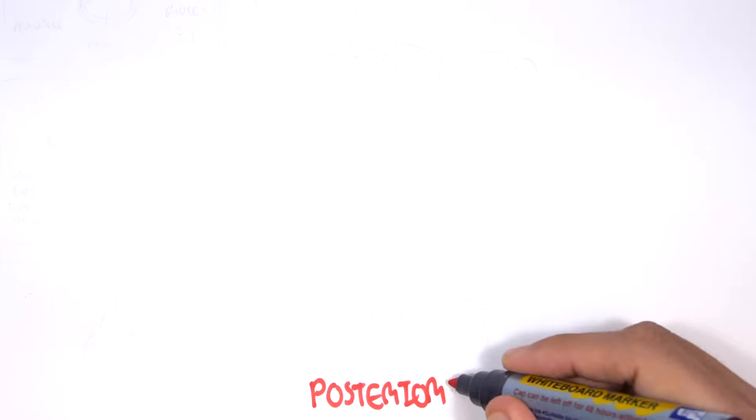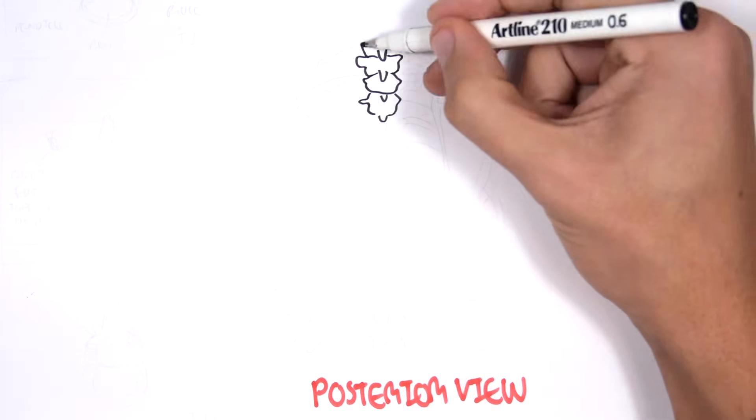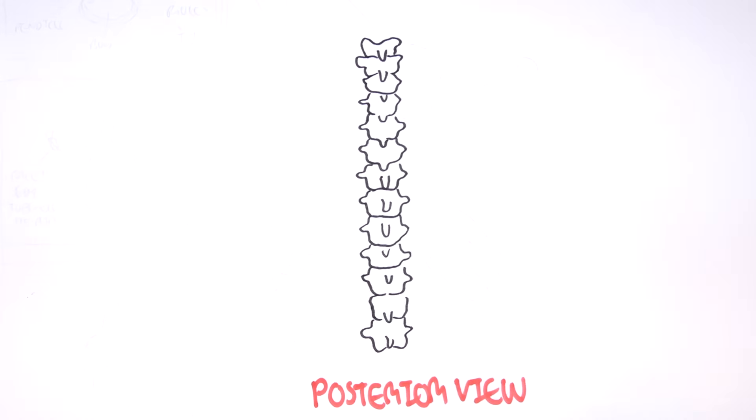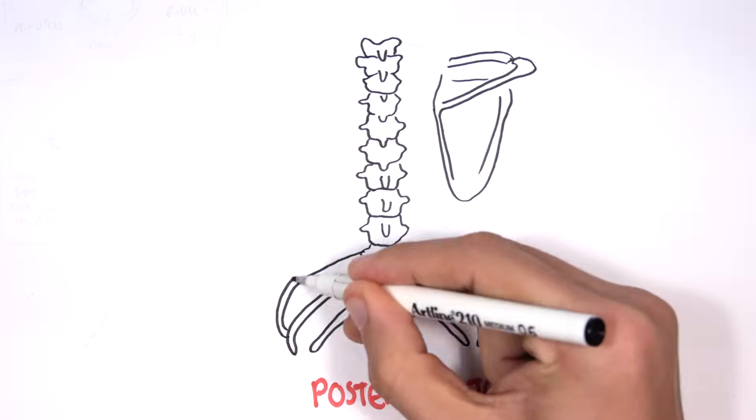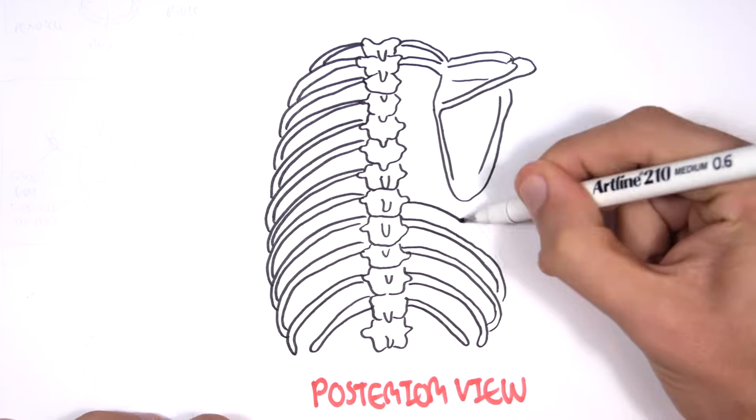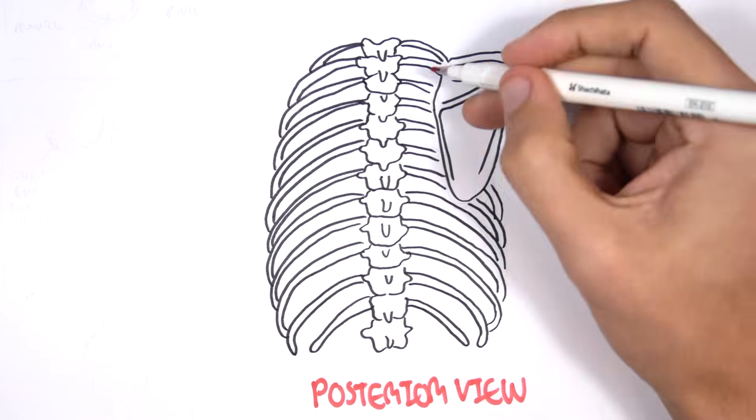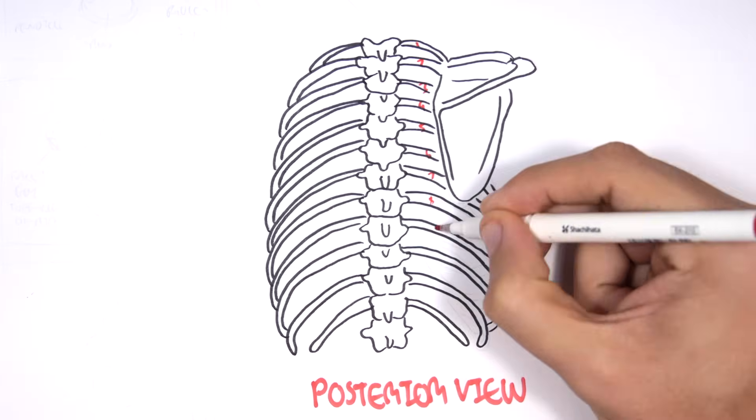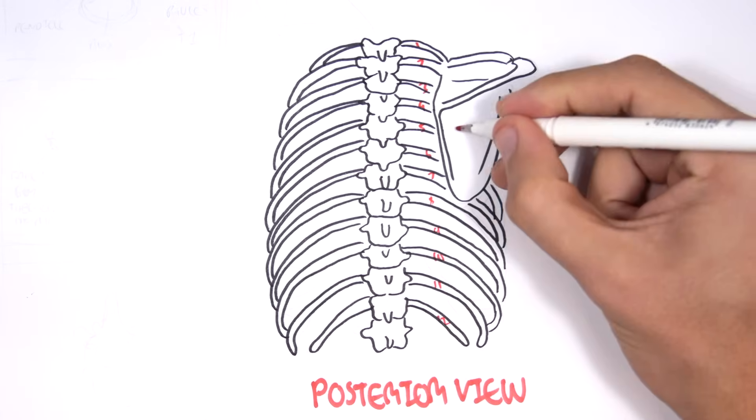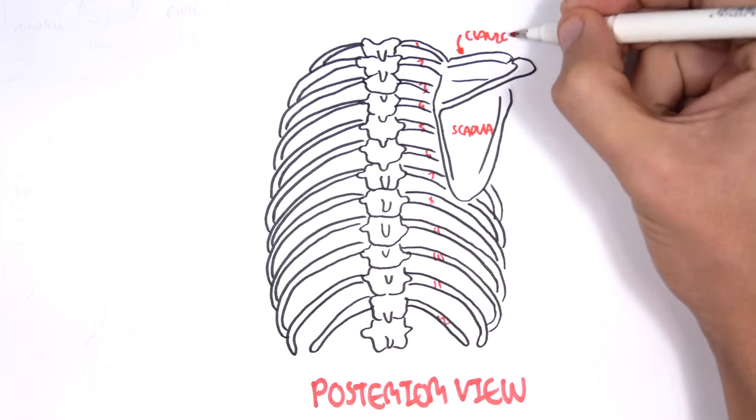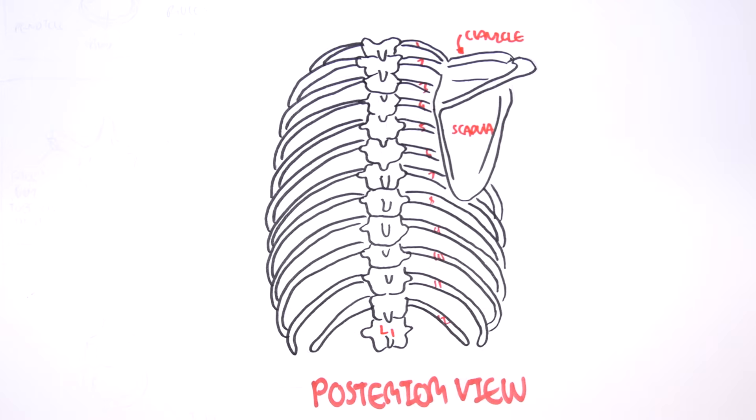Now let's look at a posterior view of the thorax, the rib cage. Here I'm drawing the vertebra again, the clavicle and scapula, and here are ribs 1 to 12. Here is the scapula and clavicle, and here is the lumbar vertebra 1.